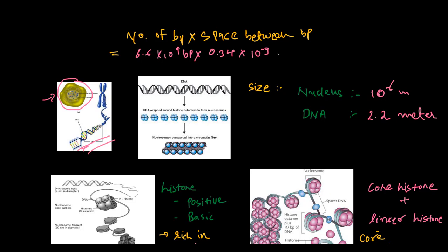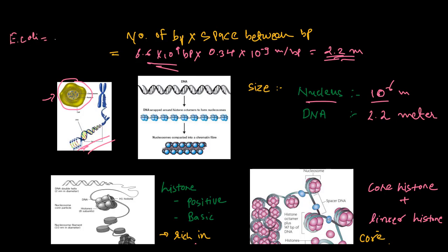The space between two base pairs is 0.34 into 10 raised to minus 9 meters per base pair. So if we calculate, the size will be 2.2 meters. You can also work in reverse — if you know the total length of the DNA, you can calculate the number of base pairs. For example, in E. coli bacteria the length of the DNA is 1.36 mm.